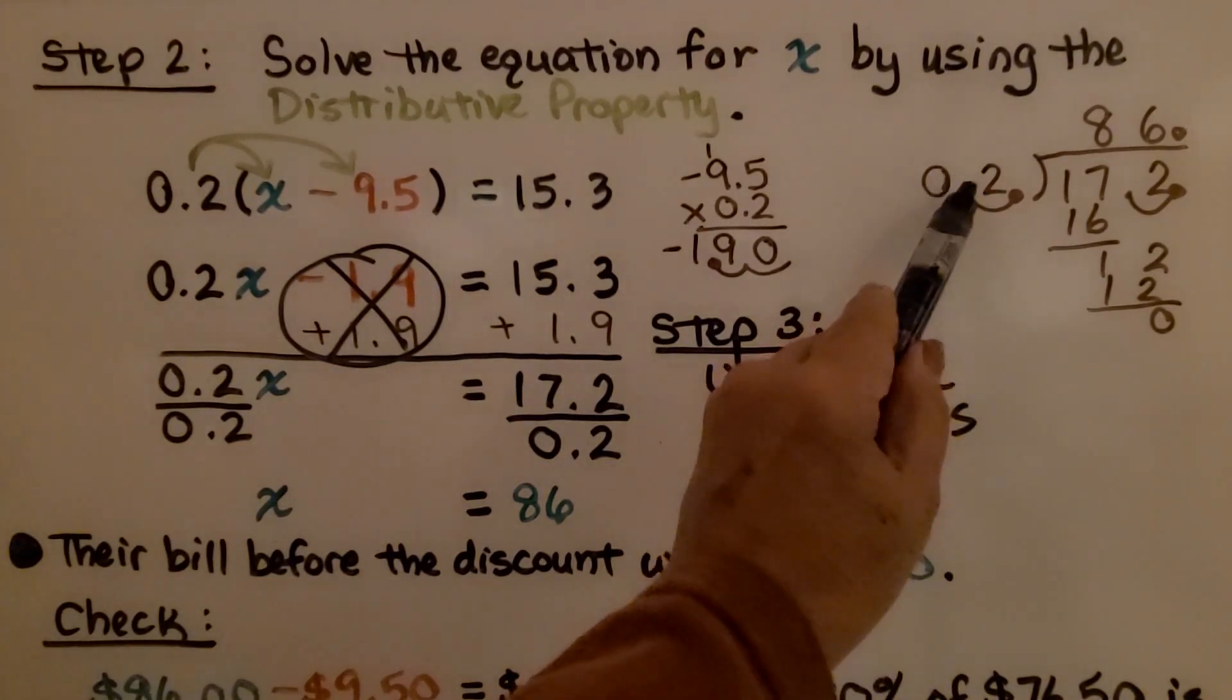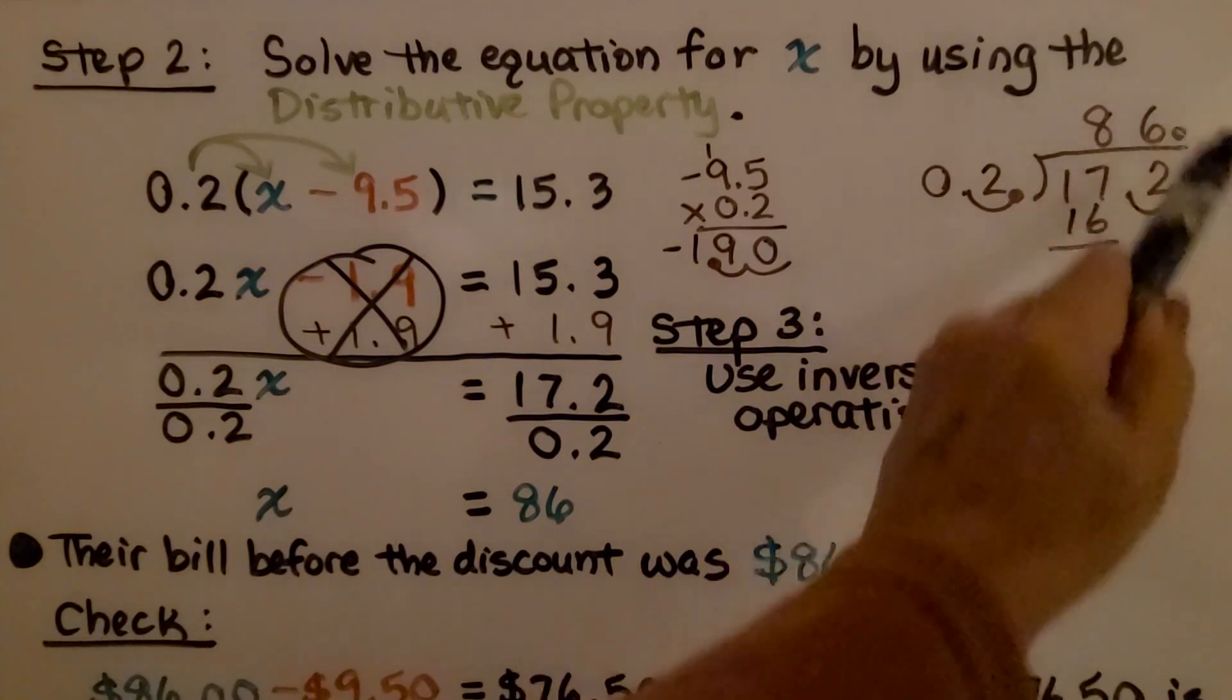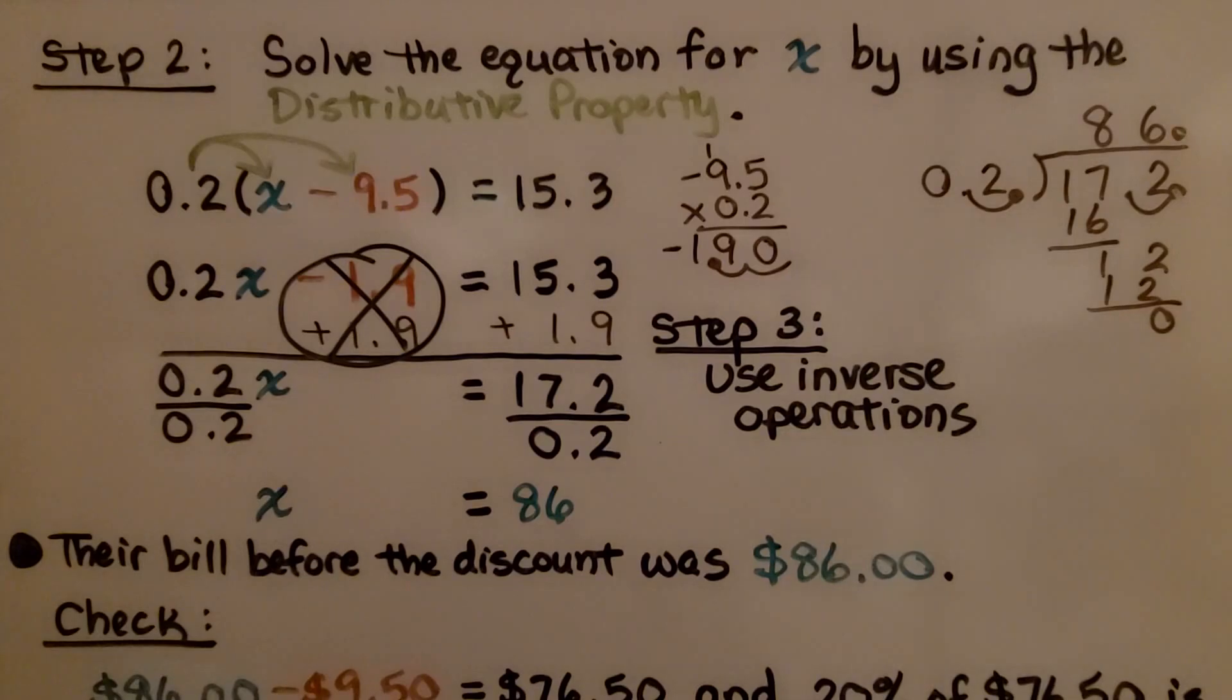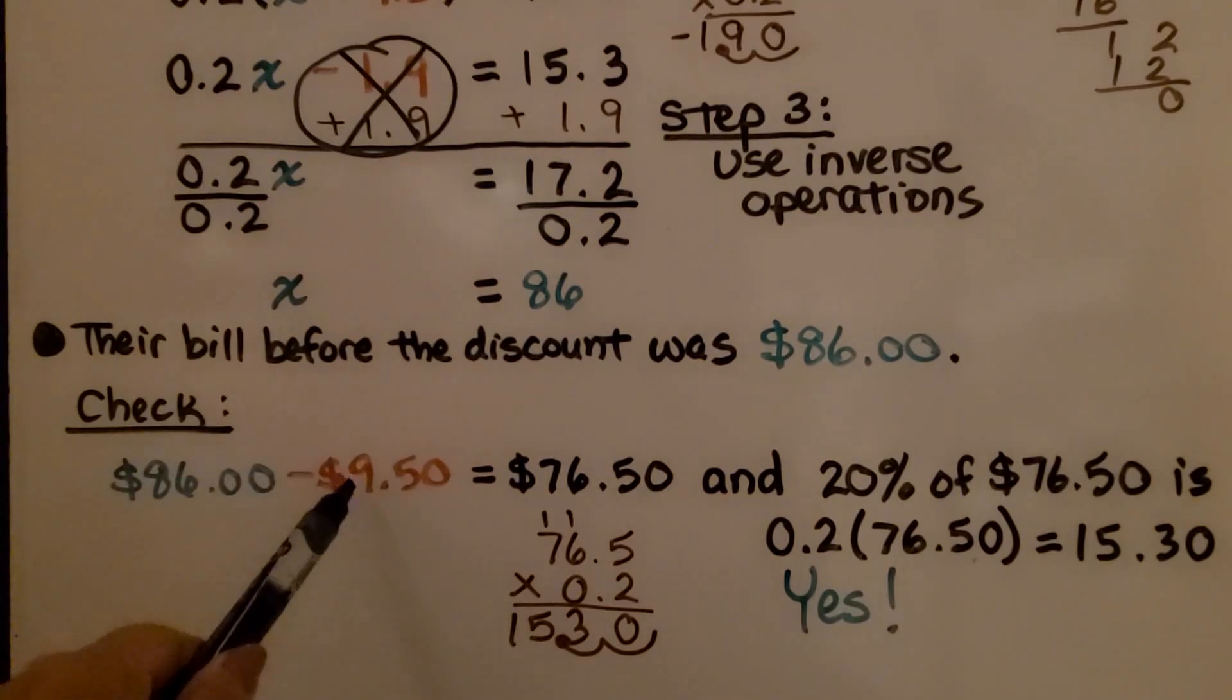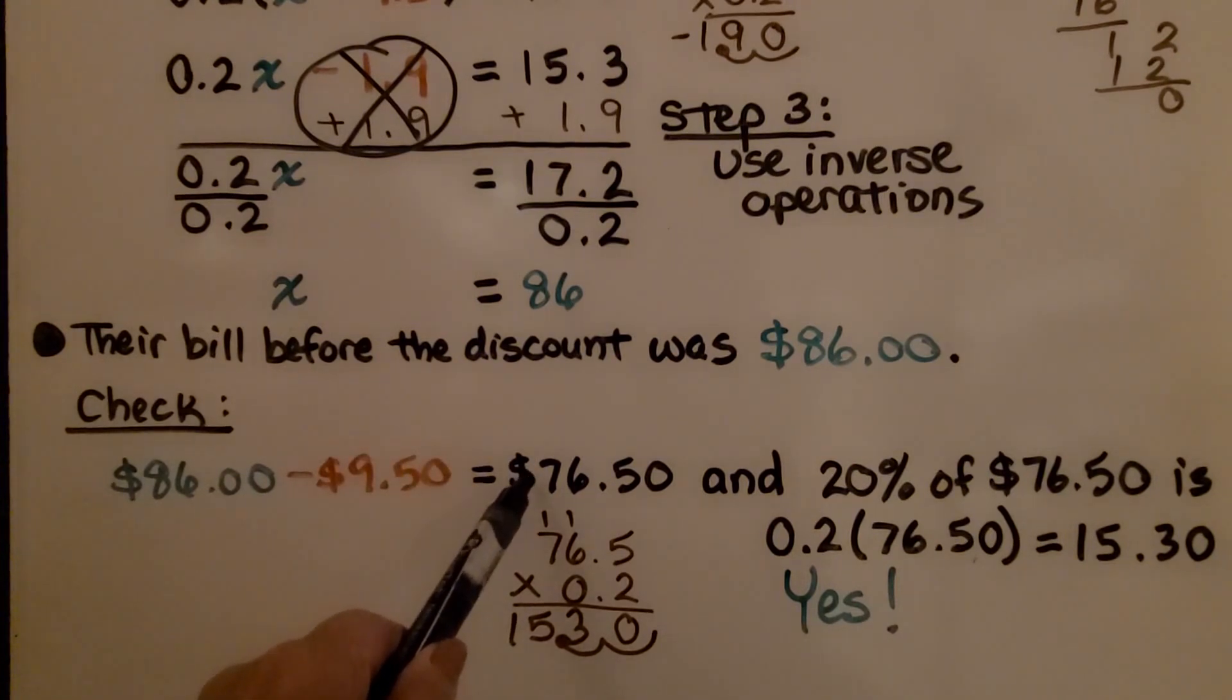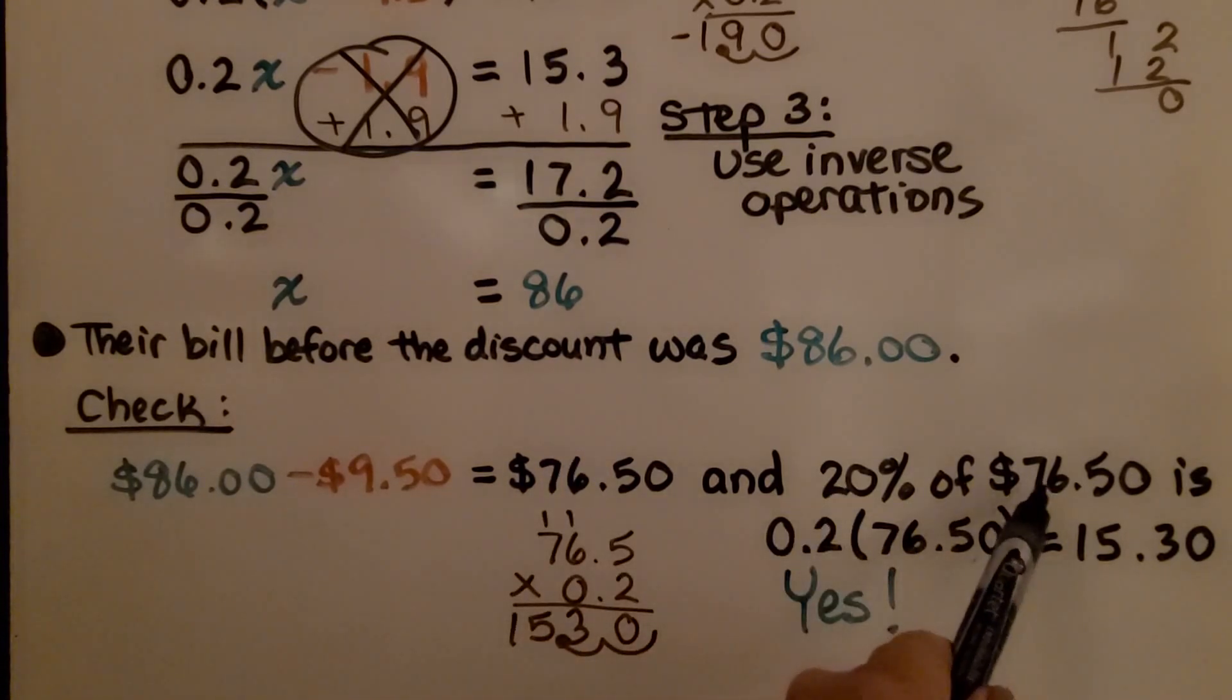Their bill before the discount was $86. Remember, when you're dividing and you've got a decimal point here, we need to move it back, which means the decimal point is going to be here. When we do our long division, we get 86. Now we can check this to see if it's accurate. We had an 86 dollar bill and subtracted the 9.50 coupon, which gave us 76.50. This was their restaurant bill after the coupon, which is the number they're going to pay the tip based on. 20% of 76.50 is 15.3 or $15.30. So yes, it checked out.